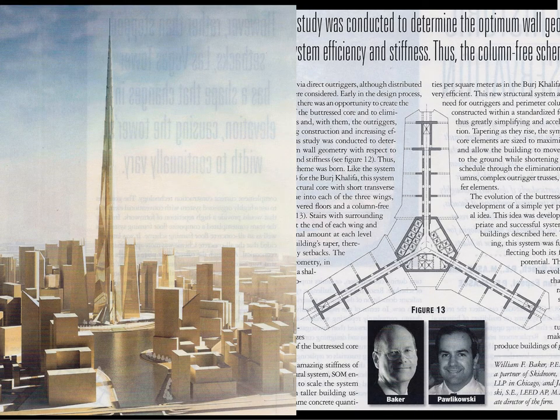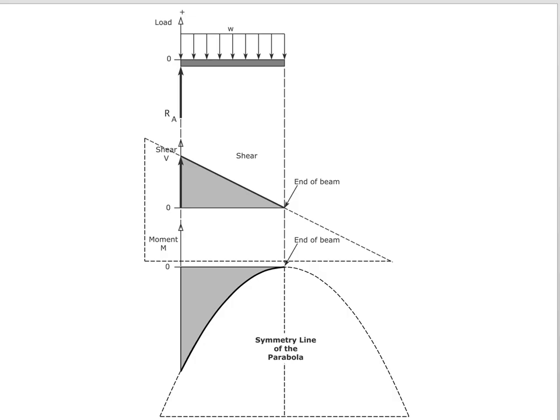This is a tapered building — the proposal from Skidmore, Owings and Merrill for what will be the tallest building in the world, the Kingdom Tower in Saudi Arabia. Now, we drew some diagrams in the chapter on beams — shear and moment diagrams — where we had a cantilevered beam supported at one end and subjected to a distributed load W.